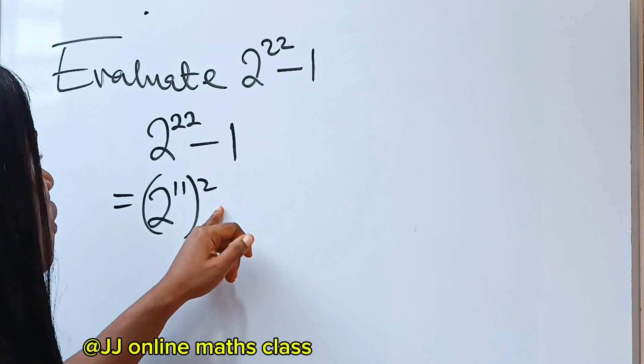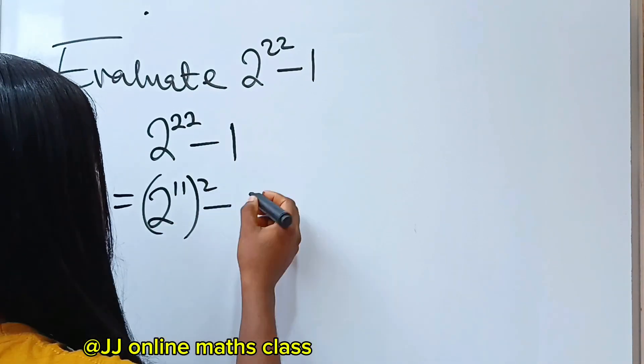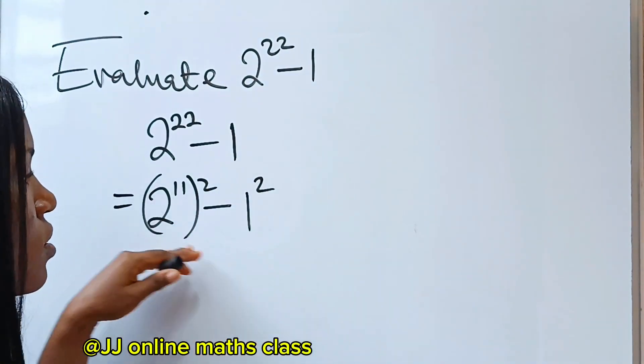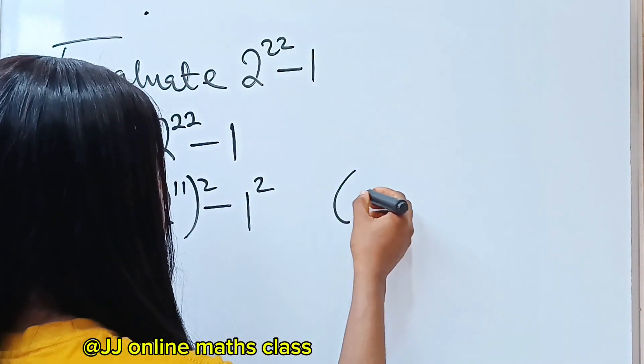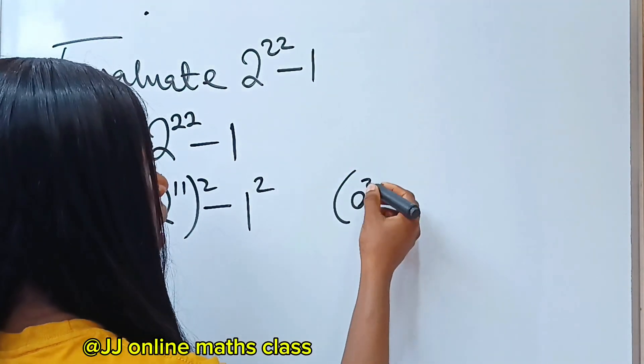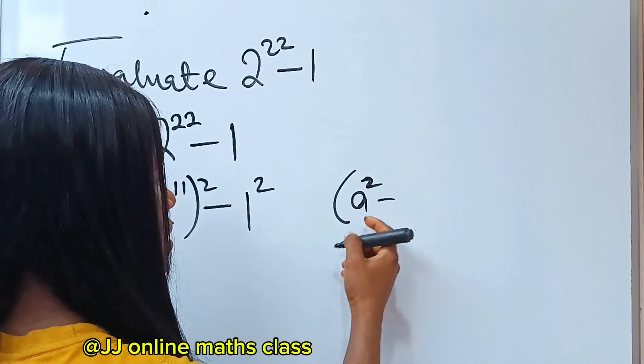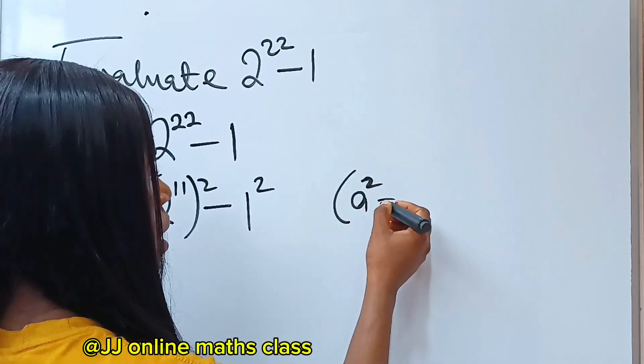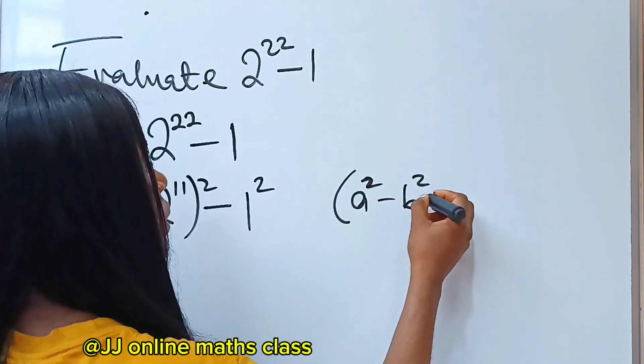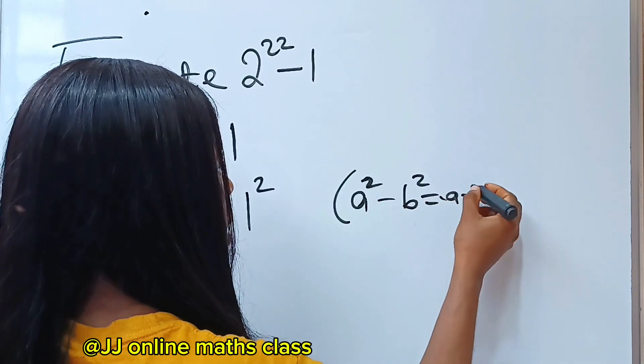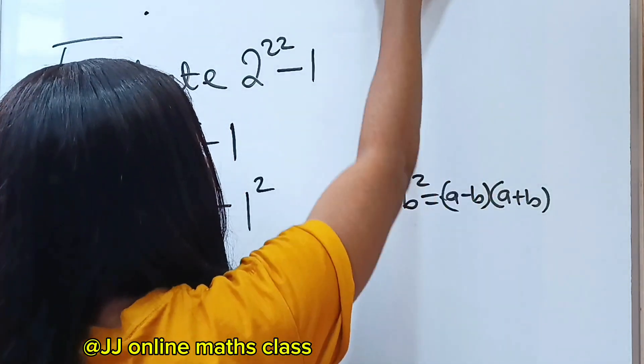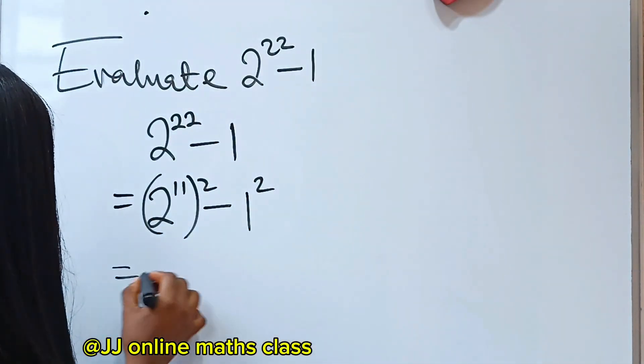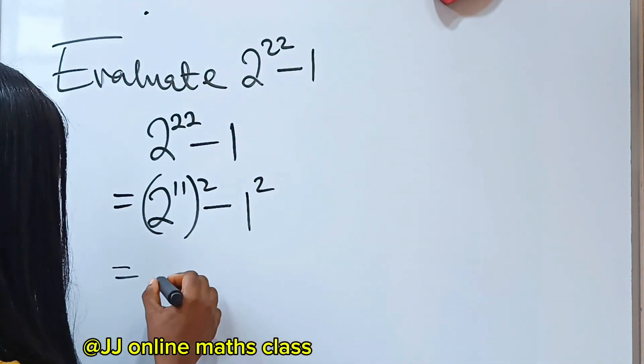To make this difference of two squares, one is written as one squared. So now we have two squares and difference of two squares. The algebraic identity for difference of two squares is that A squared minus B squared is equal to A minus B multiplied by A plus B. That is exactly what we are going to do here.